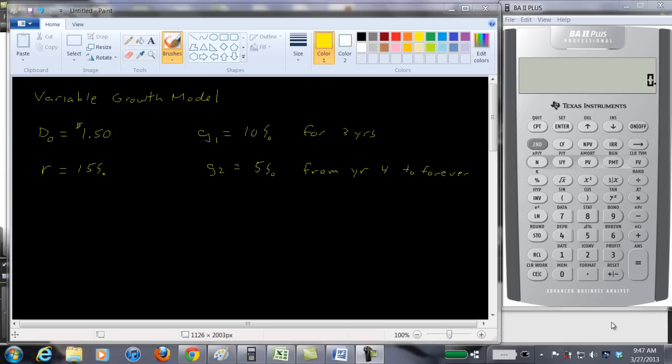Perhaps we'll have, let's take a look at a simple case where the growth rate is fast for a few years and then it slows down. And of course you could have more than two growth rates. You could have three, four, five, but just to keep it simple we'll use two.